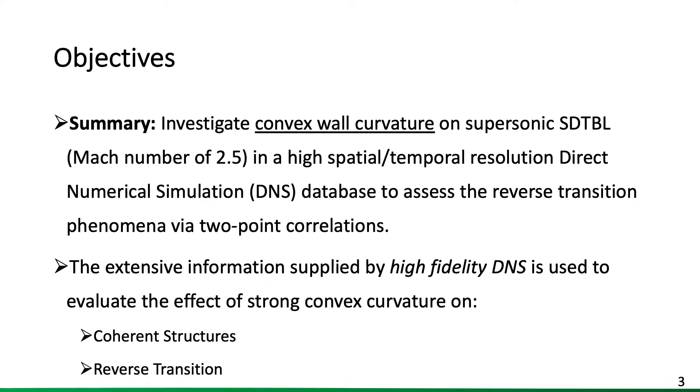The main objective of the present study is to investigate convex hull curvature on a supersonic spatially developing turbulent boundary layer at Mach number 2.5 via direct numerical simulation, to assess reverse transition via two-point correlations. Although this sounds a bit broad, the extensive information supplied by the high-fidelity DNS will be used to evaluate the effects of strong curvatures on coherent structures and reverse transition.